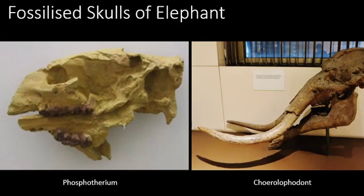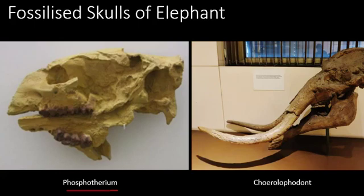These are the fossilized skulls of different genera of extinct elephants. The first one is called Phosphotherium. The elephants of this genus were of small size. They had small-sized skulls with nasal openings as part of the snout. They lacked proboscis, and there was also absence of tusks and trunk.